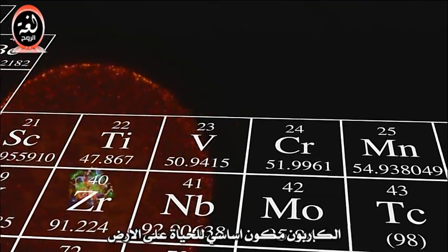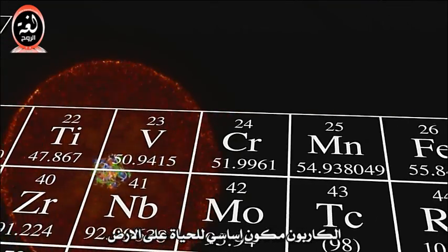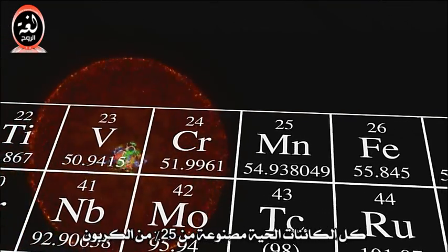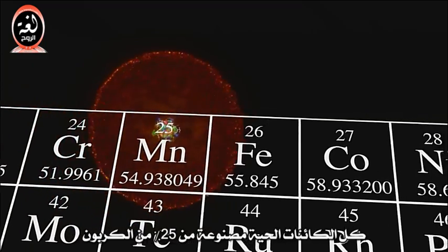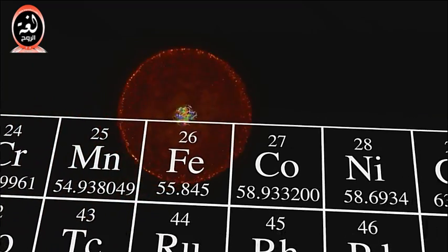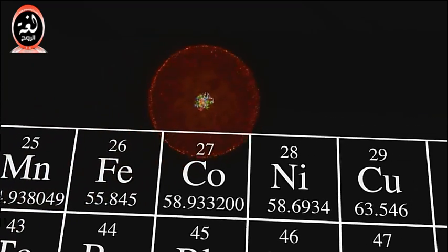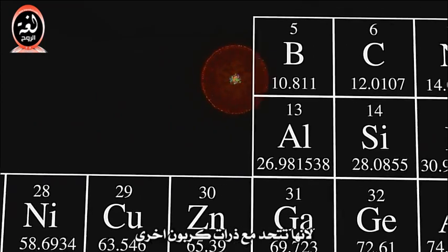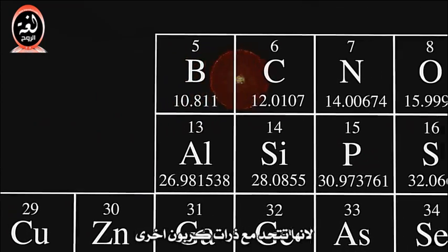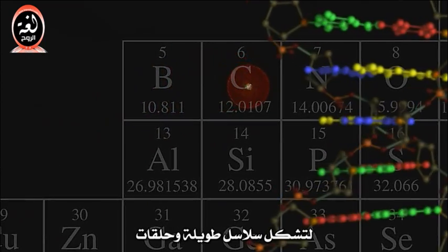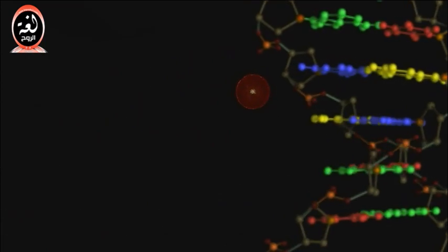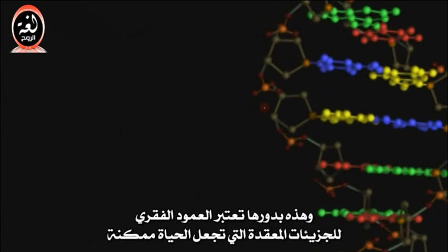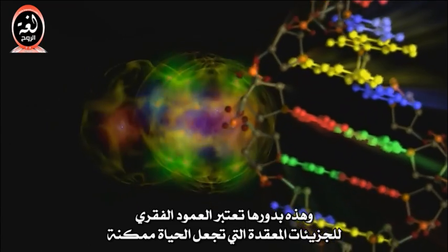Carbon is a critical ingredient for life on Earth. All living things are made up of about 25% carbon. The carbon atom is unique because it can bind to other carbon atoms to form long chains and rings, and these in turn serve as the backbone of complex molecules that make life possible.